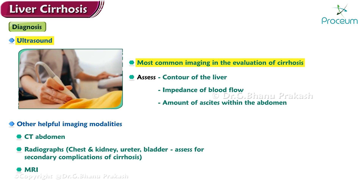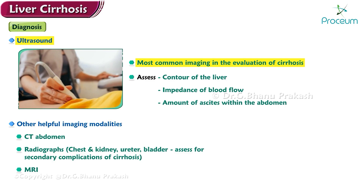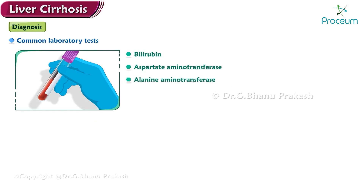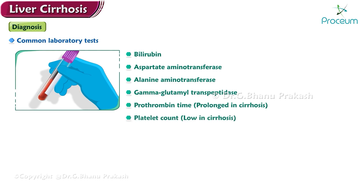In the workup of cirrhosis, several laboratory tests are required to assess liver functionality. Common tests include bilirubin, aspartate aminotransferase, alanine aminotransferase, gamma-glutamyl transpeptidase, prothrombin time (prolonged in cirrhosis), platelet count (low in cirrhosis), and the electrolyte panel, which should show low sodium if cirrhosis is present.